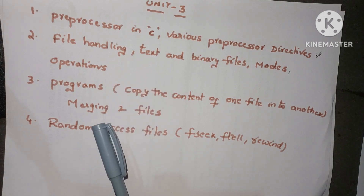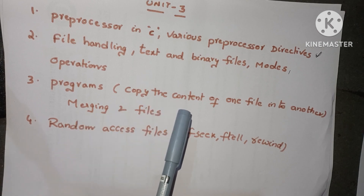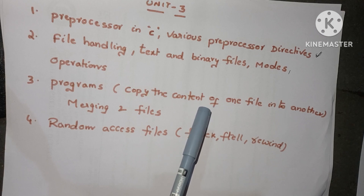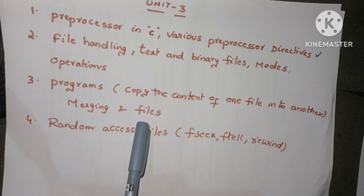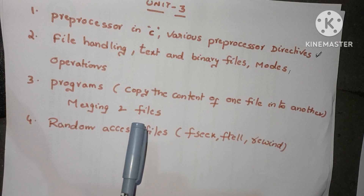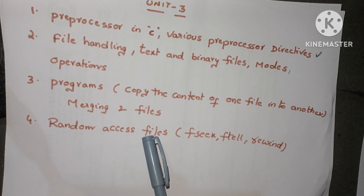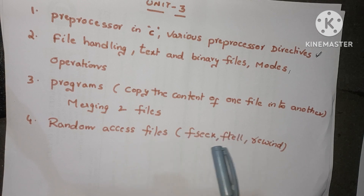Next: how to read and write programs using files. Very important programs include copying the content of one file into another file, and merging two files. Those are the very important programs. Also, what is a random access file and what operations are performed on it?